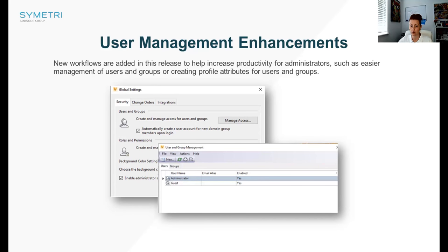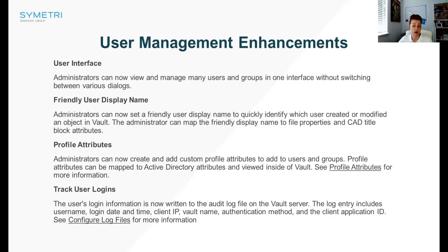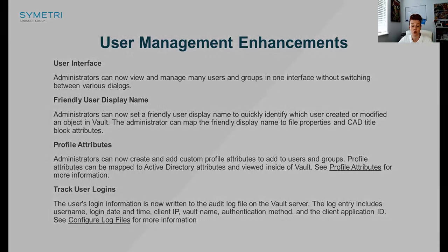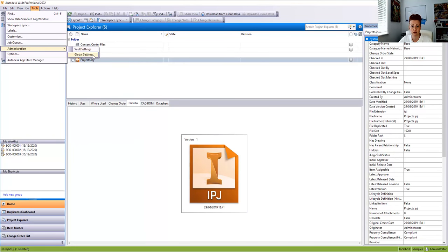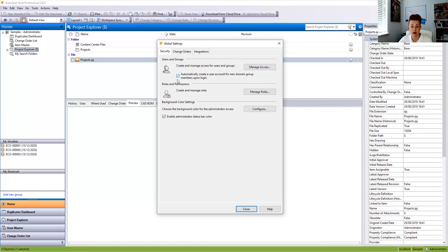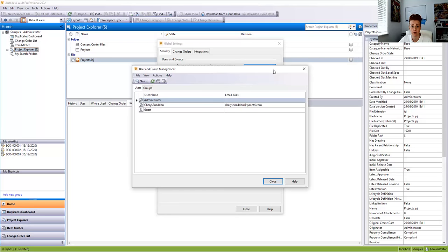The next area is user management enhancements. As seen from the dialog boxes, the Global Settings dialog box for users and groups has completely changed. We used to have access to users and groups separately; now we've just got Manage Access where we can manage both in one interface. There's a friendlier user display name where admins can add a display name, profile attributes can be added, and we can track user logins from the ADMS console. Let's log in as administrator and look at those Manage Attributes under Global Settings.